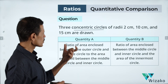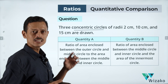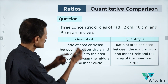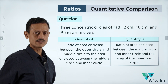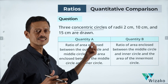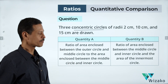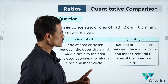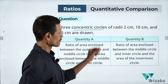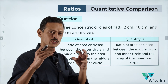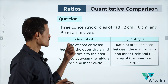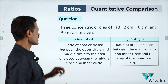Quantity A is the ratio of the area enclosed between the outer circle and middle circle to the area enclosed between the middle circle and inner circle — essentially a ratio of areas of two regions. Quantity B is the ratio of the area enclosed between the middle circle and inner circle to the area of the innermost circle — again a ratio of areas of two regions within the same three concentric circles.